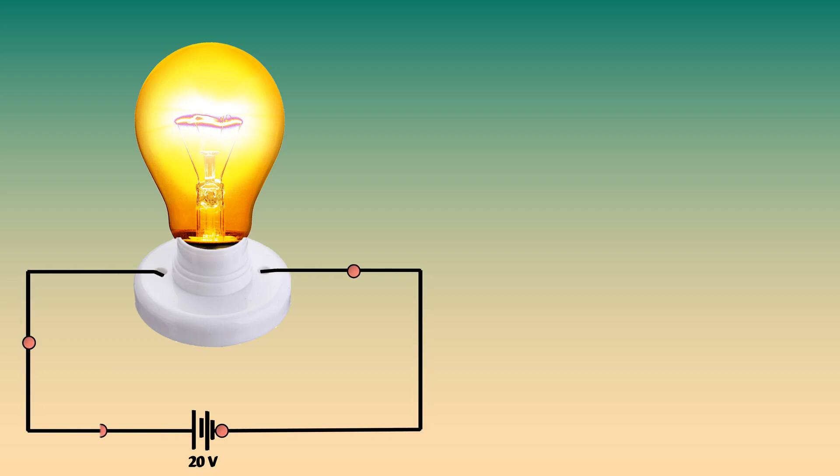When a battery is connected, all these free electrons which are negatively charged are attracted towards the positive terminal of the battery. Similarly, from the negative terminal, the electrons are repelled. This causes the electrons to flow in one particular direction. This flow of electrons is called the current.